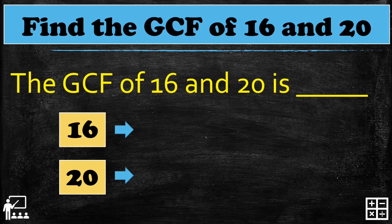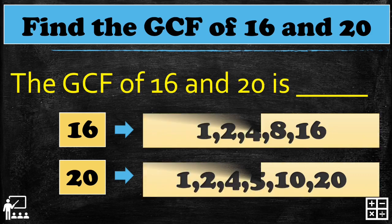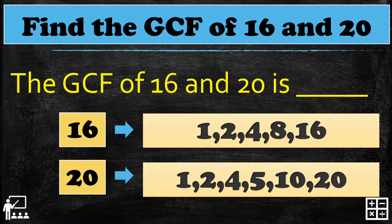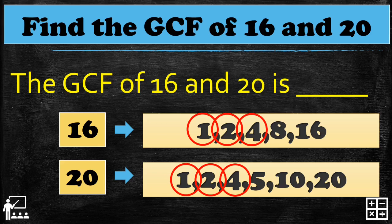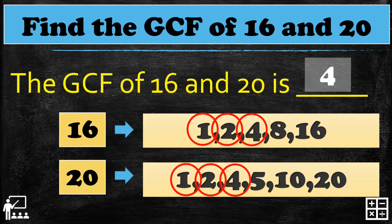I'll give you the set of factors of 16 and 20. Here are the possible factors of 16 and 20 — can you guess what the common factors are? The common factors are 1, 2, and 4. So the greatest common factor of 16 and 20 is 4, because 4 is the largest number in that set.